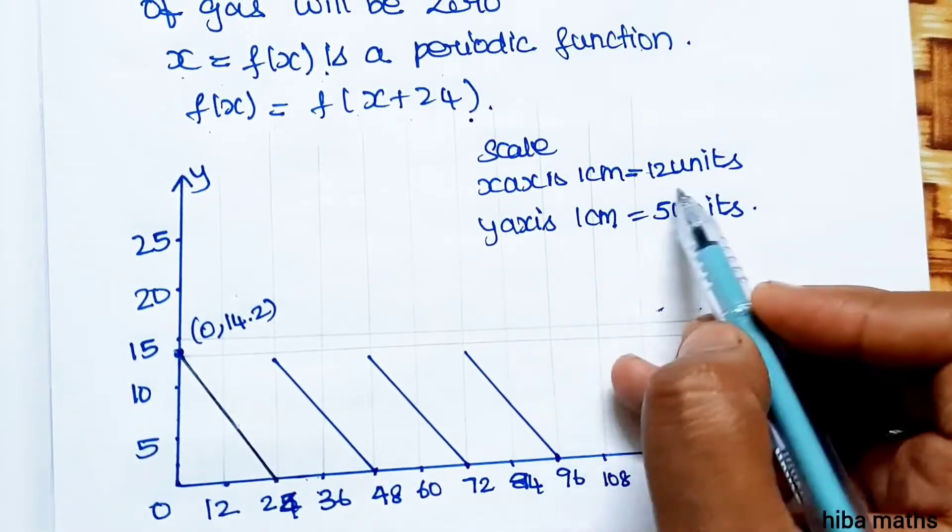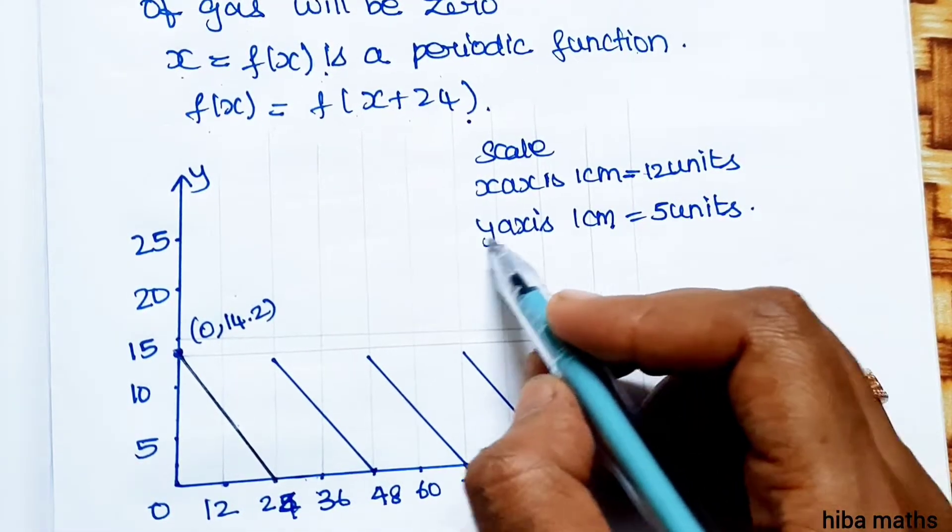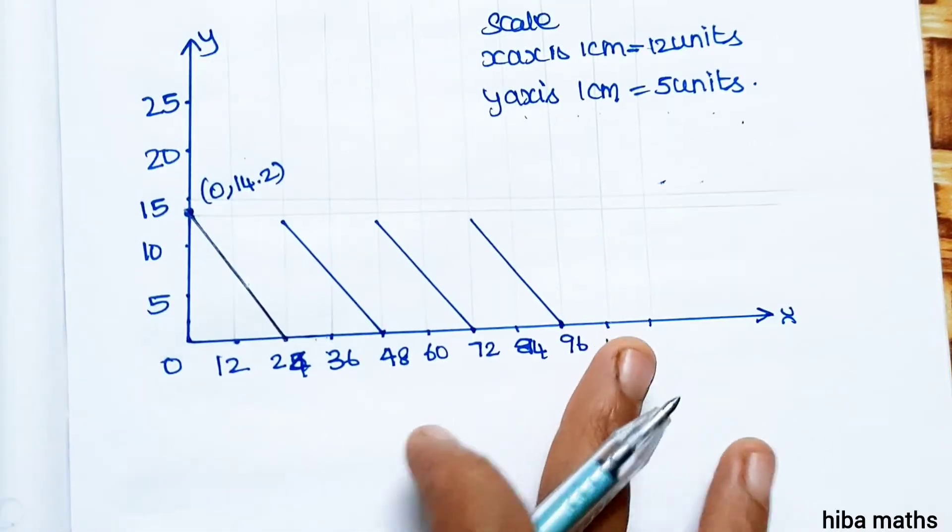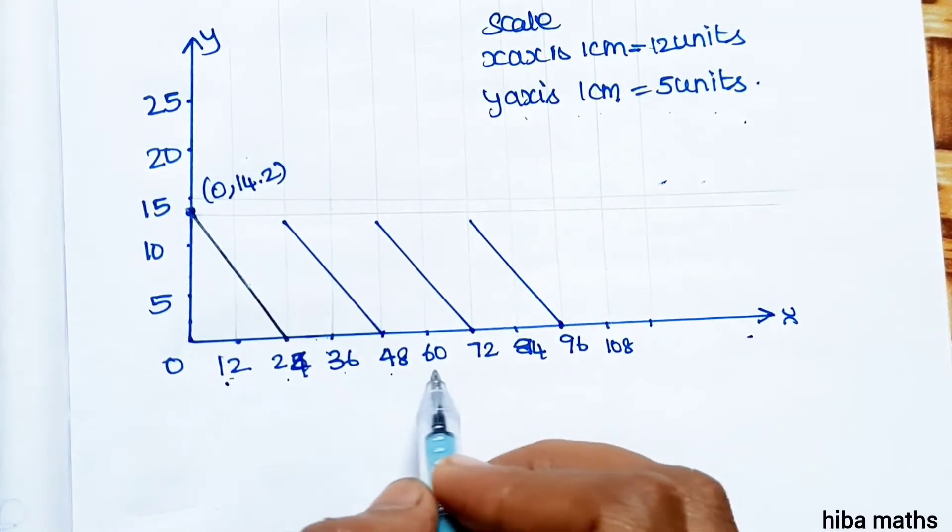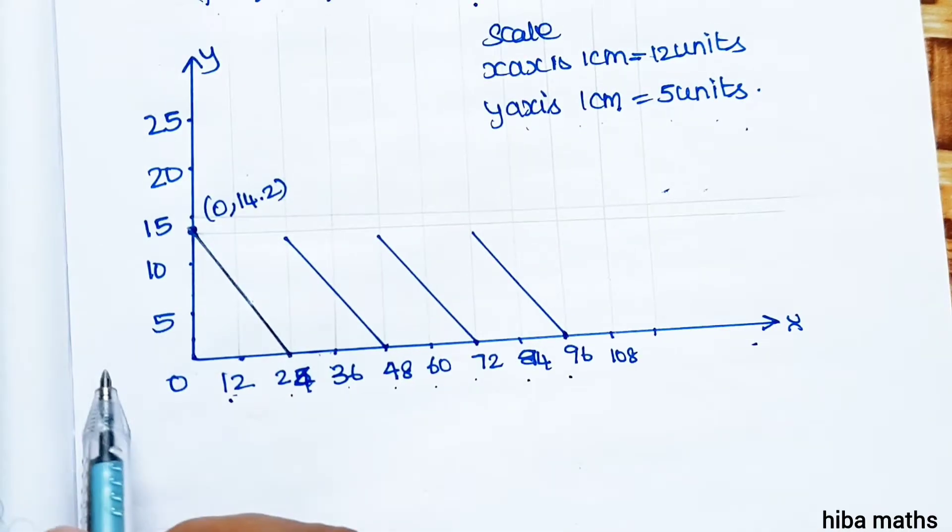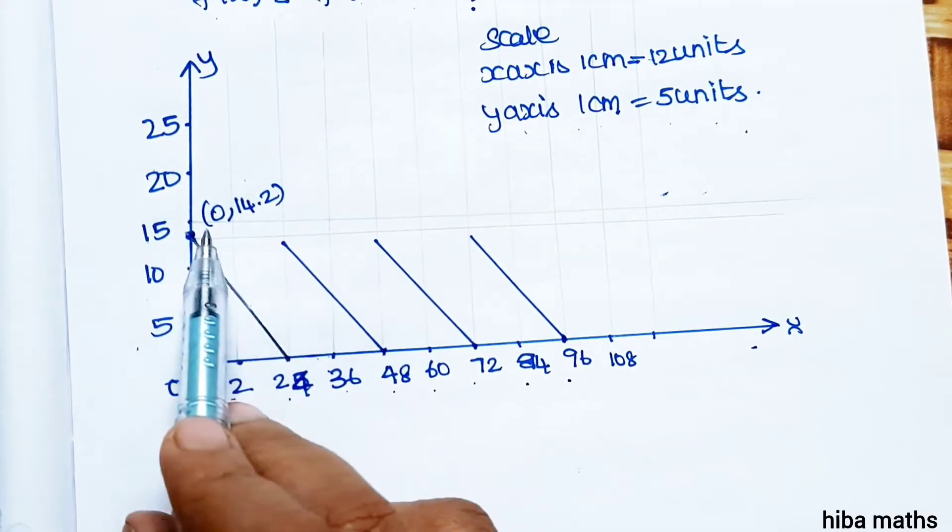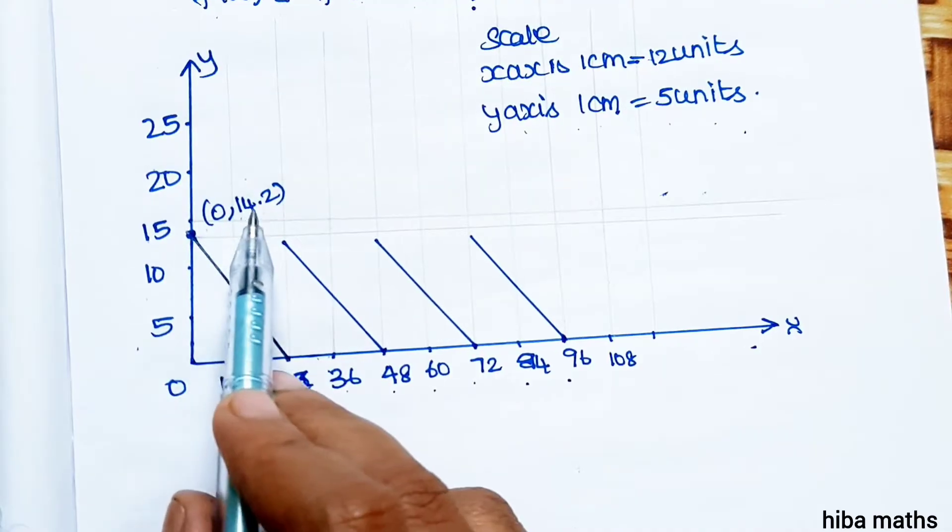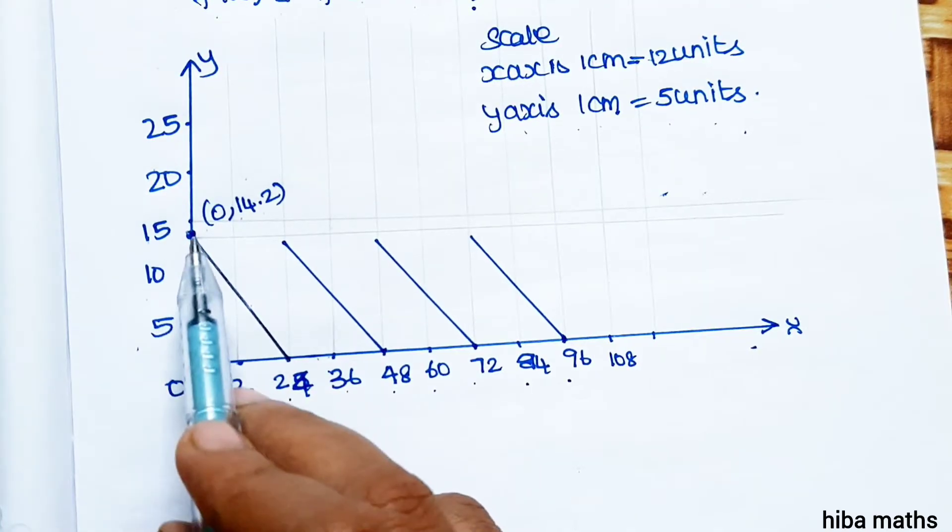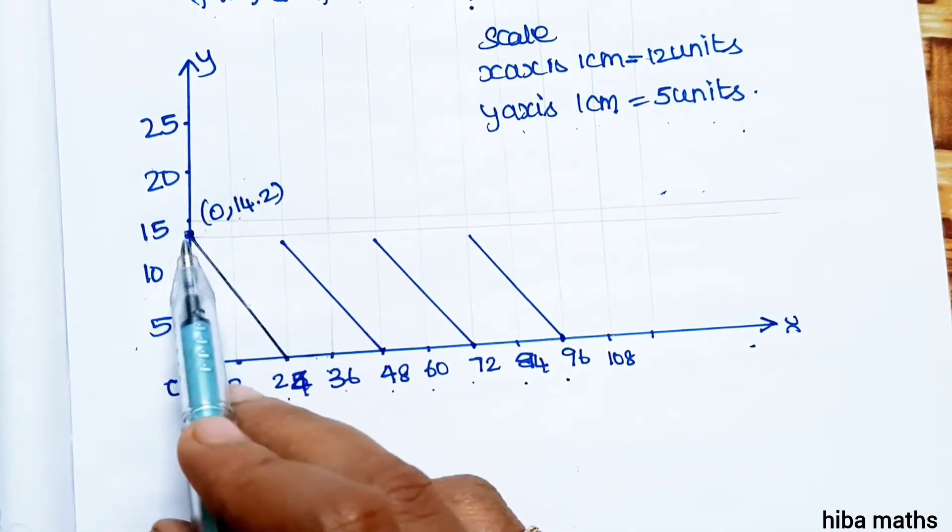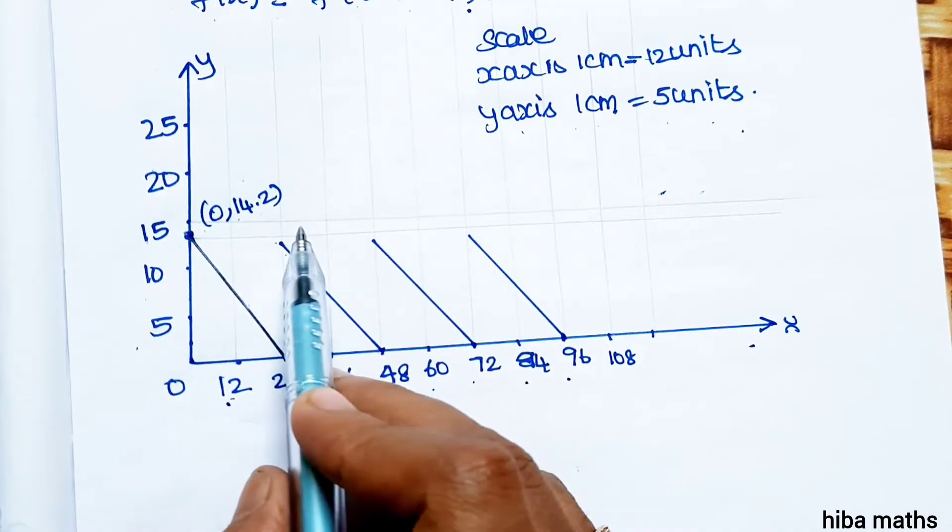Scale: x-axis 1 cm = 12 units, y-axis 1 cm = 5 units. On the y-axis, mark 5, 10, 15, 20, 25. The first point is (0, 14.2). On the x-axis, mark 12, 24. Draw the line from (0, 14.2) to (24, 0).